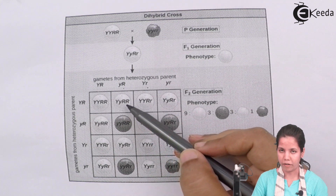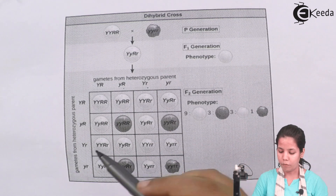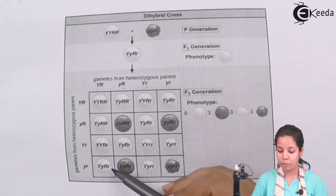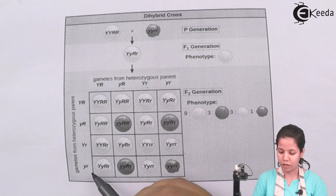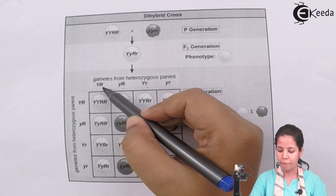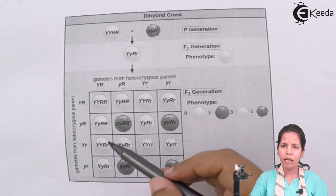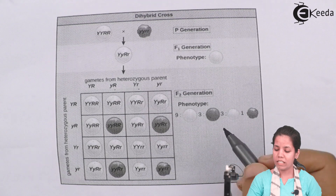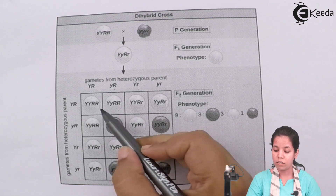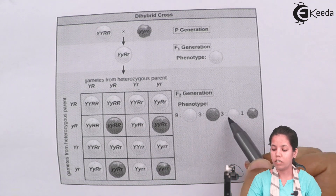He followed this same pattern in all his experiments. Whenever you multiply a gamete with its adjacent parent gamete, you get its progeny. For example, small y small r multiplied with capital R capital Y gives the progeny capital Y small y, capital R small r. This is how Mendel performed his crosses and obtained the genotype results from the dihybrid cross.